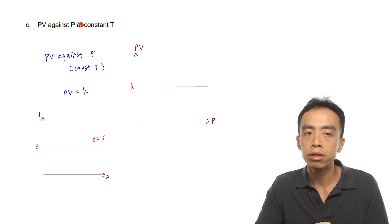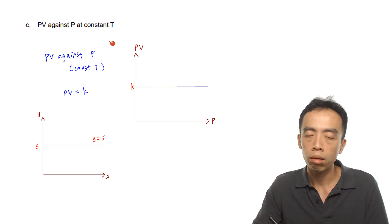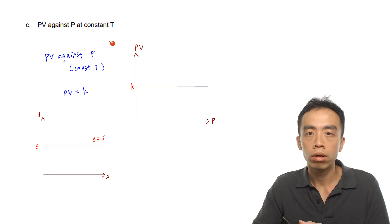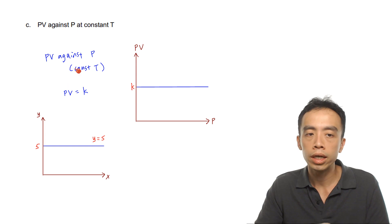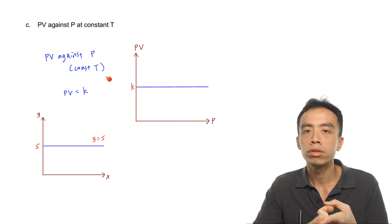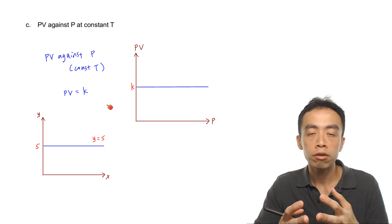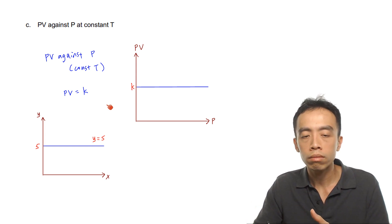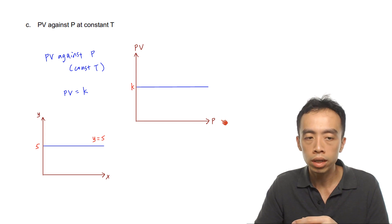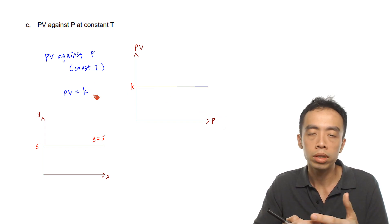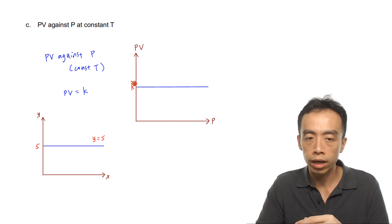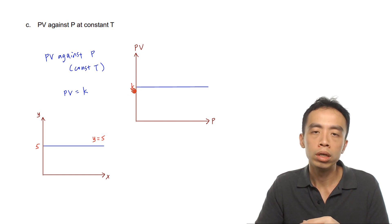For part C, plotting PV against P at constant temperature: PV equals nRT, where n, R, and T are all constant, so PV is a constant. This means that for any value of P, PV is always equal to k — the constant term nRT. We expect a horizontal line with the y-intercept equal to k.